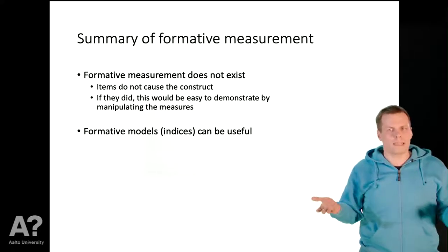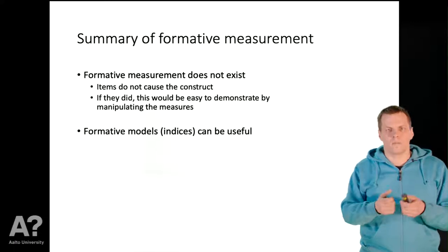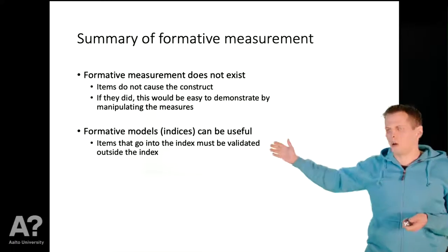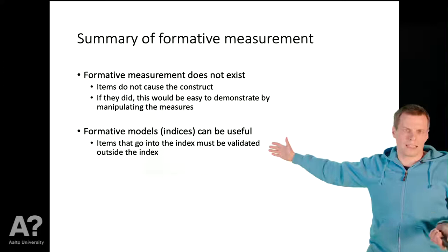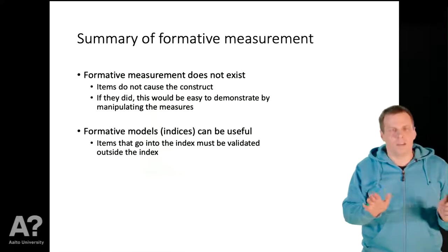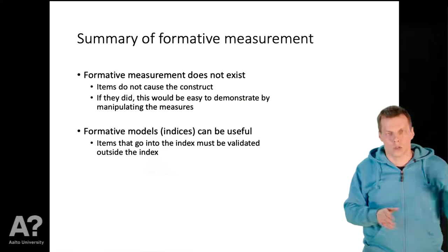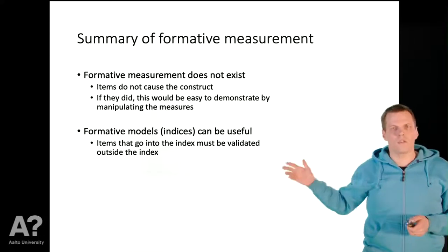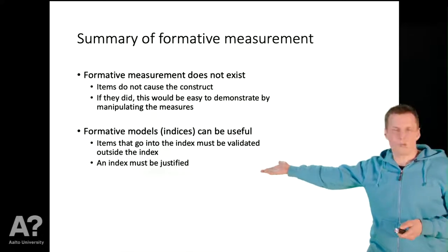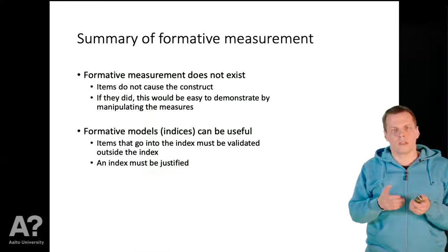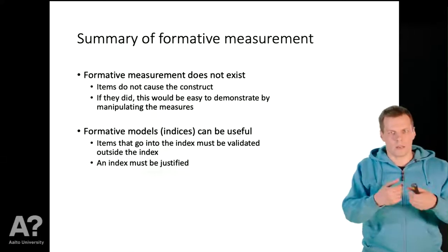However, formative models or indices can be useful — you can take sums of different variables, and there are good reasons to do so. The items going into the index must be validated separately; simply summing three indicators says nothing about measurement validation. We can sum a person's height and weight, but that doesn't tell us whether those measures are valid or reliable — and the sum may not make sense anyway. You also have to justify why the index is useful, which is a non-statistical argument: you must explain why combining different things makes sense.